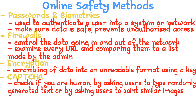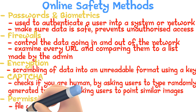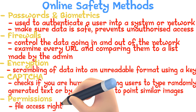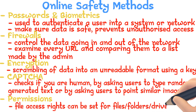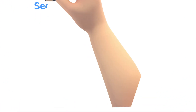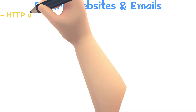Permissions: file access rights can be set so that only users with permission can access files, folders, or drives. The user can be given permission only to read, or to both read and write.